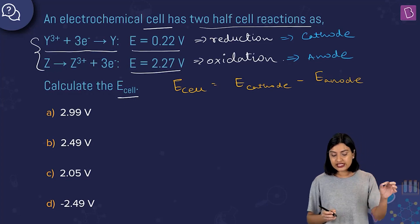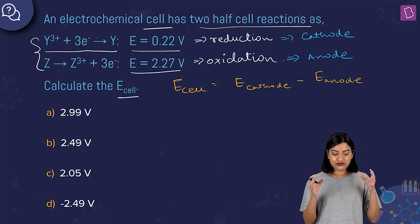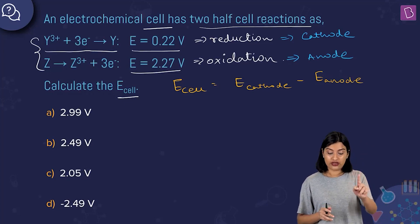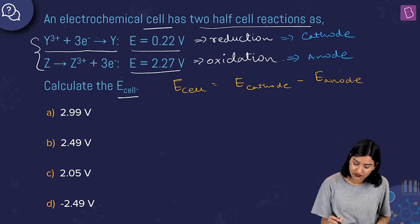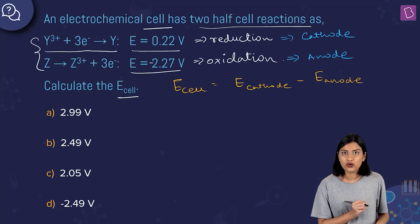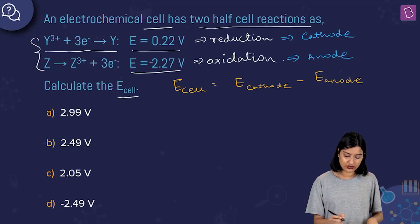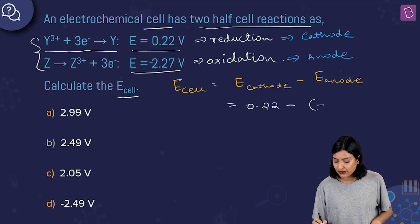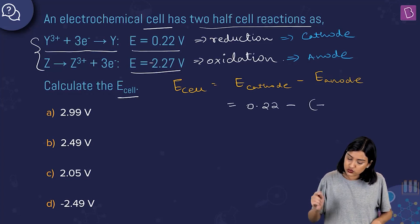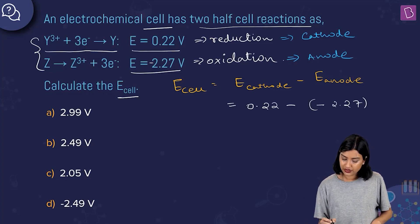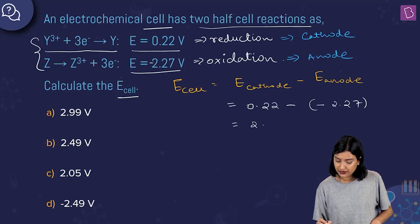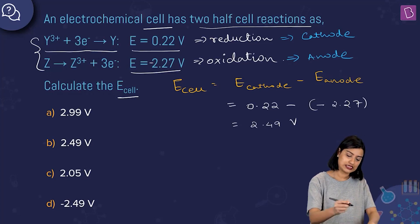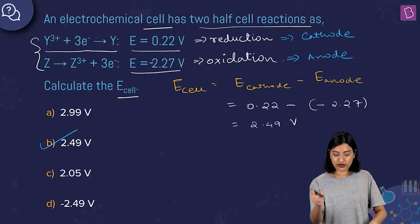Be careful: for the oxidation half-reaction, the potential given is an oxidation potential, not a reduction potential. So when calculating E_cell, you take the negative of it. E_cell = 0.22 − (−2.27) = 2.49 volts, which is option B.